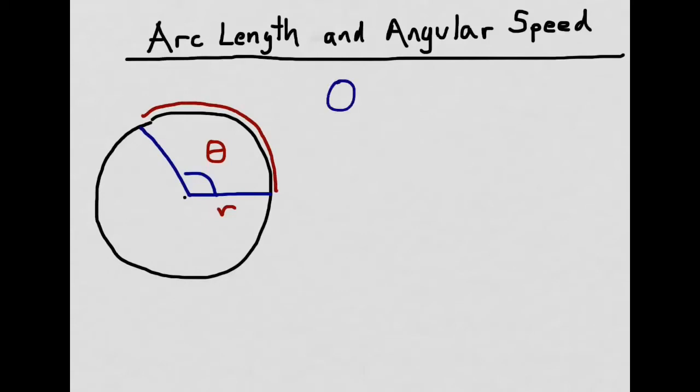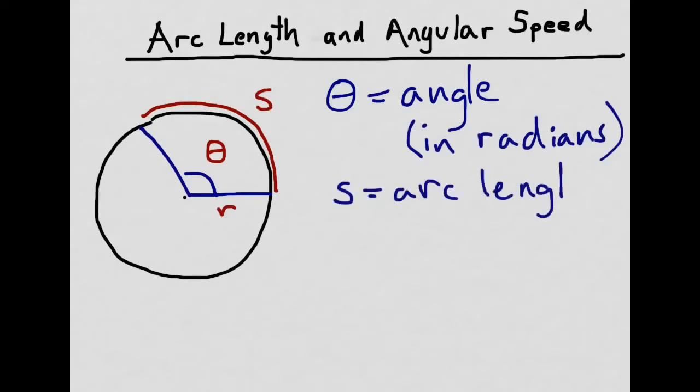So theta is our angle and we're going to measure it in radians. We'll use the letter S to represent the arc length, and we can say this is the arc subtended by theta.